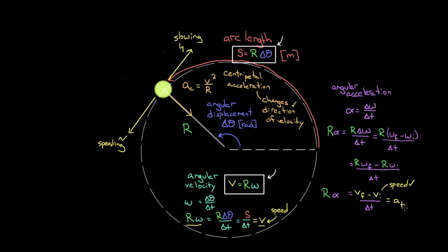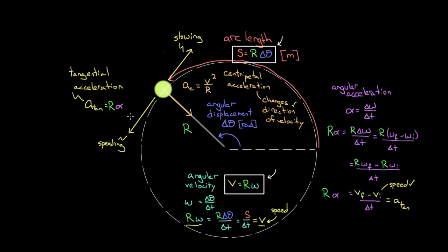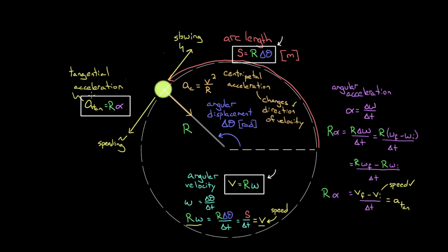The component we found — r·α — is called the tangential acceleration because it acts tangentially to the circle, parallel to the direction of motion. It either speeds the object up or slows it down. This is a third boxed formula: tangential acceleration a_t = r·α. An object going in a circle always has centripetal acceleration, but only has tangential acceleration if its speed is also changing.